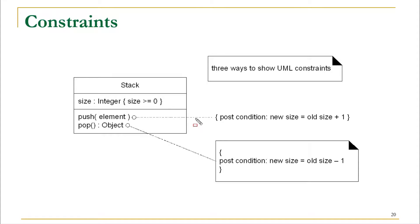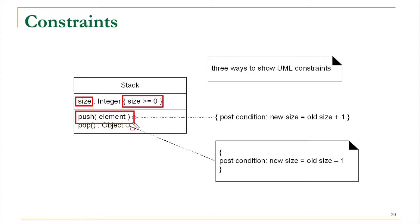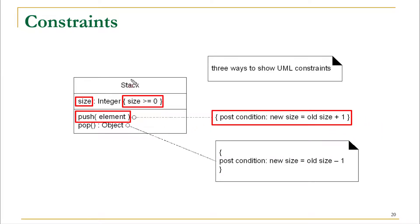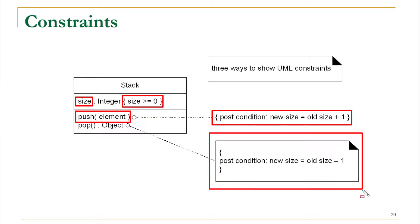Sometimes you may need to show constraints in your diagram. Constraints can be illustrated in three ways: first, by using curly braces and writing the constraint inside them — placed immediately next to the relevant attribute; second, by placing the constraint outside the class classifier next to the relevant method; and third, by using a separate box and mentioning the constraint inside it.